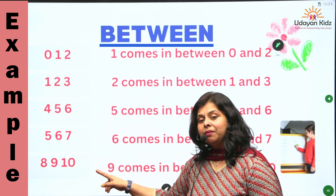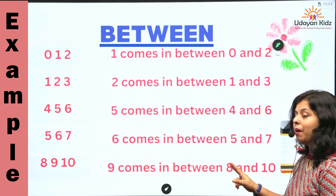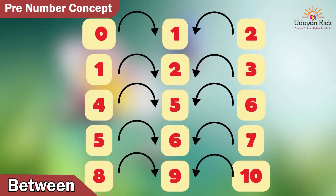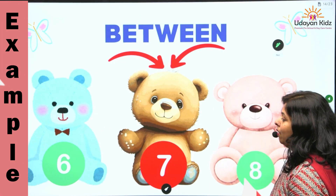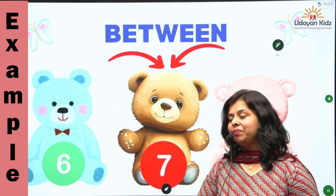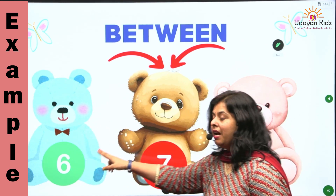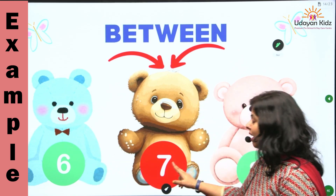Last, where does number nine come? Number nine comes in between number eight and number ten. Here is another example. Where does number seven come, children? Number seven comes in between number six and number eight. Six, seven, eight.